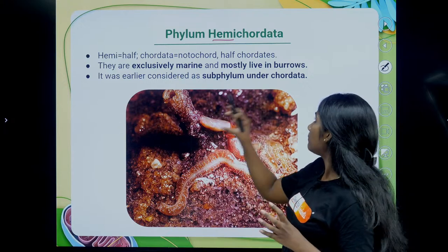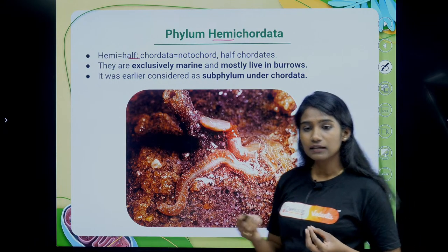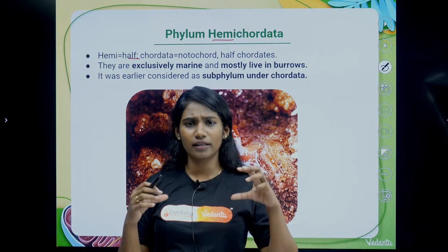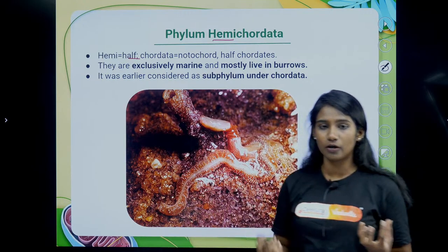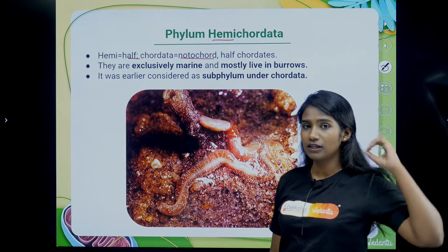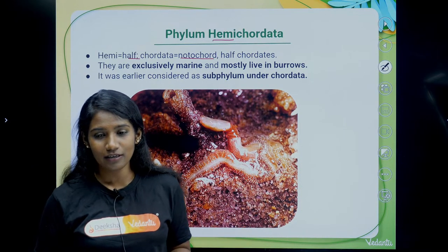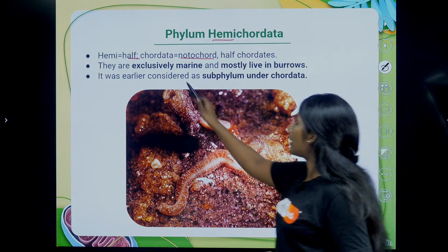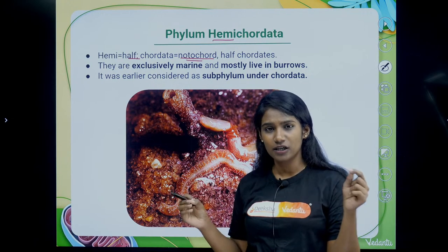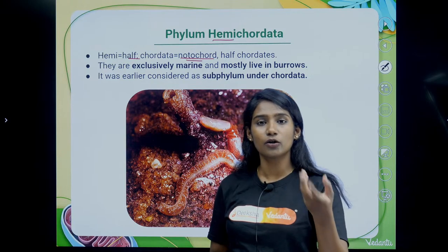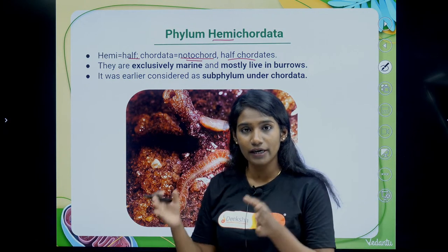Now, what is the meaning of the term Hemichordata? Hemi means half. Chordata refers to the notochord — that rod-like structure present on the dorsal side of the body that provides support. So hemichordata means the notochord is only half — either it is present only during some part of the life, or it might not be complete. It is not present throughout their entire lifetime.